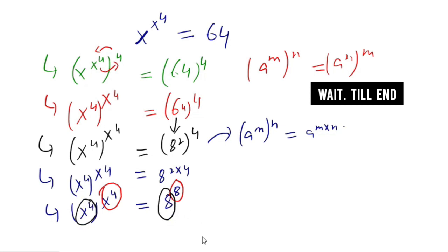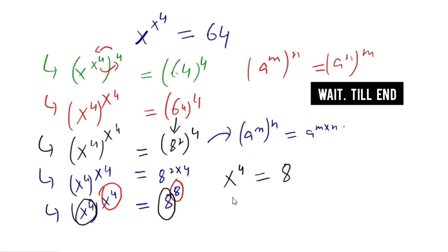From this we conclude that x^4 is equal to 8. Either we can take its base or its power — therefore x^4 is equal to 8, or we can write it as x is equal to the 4th root of 8. This is the solution of the problem.